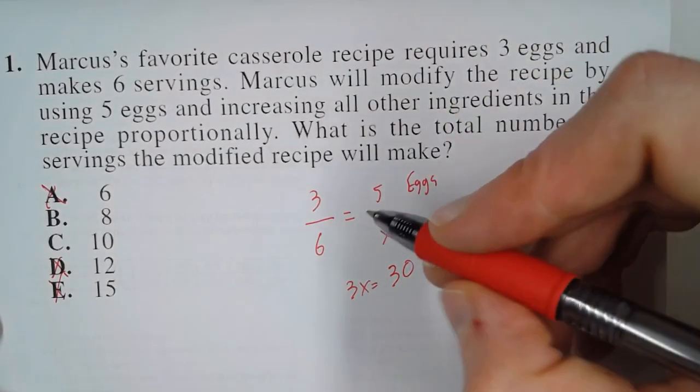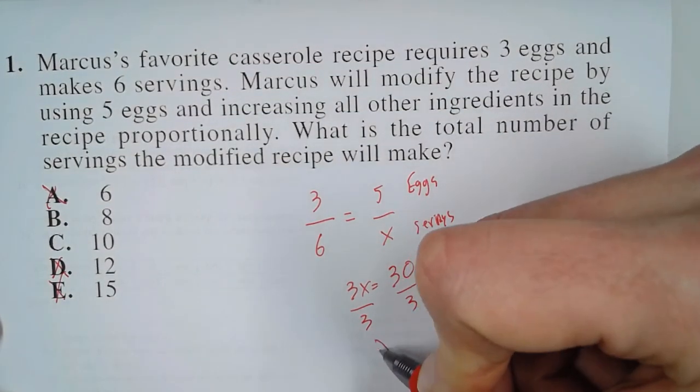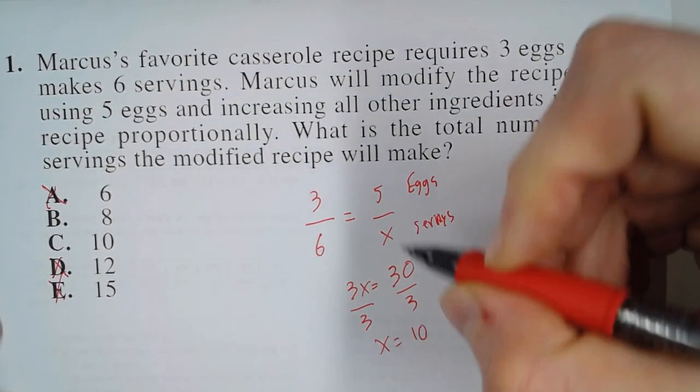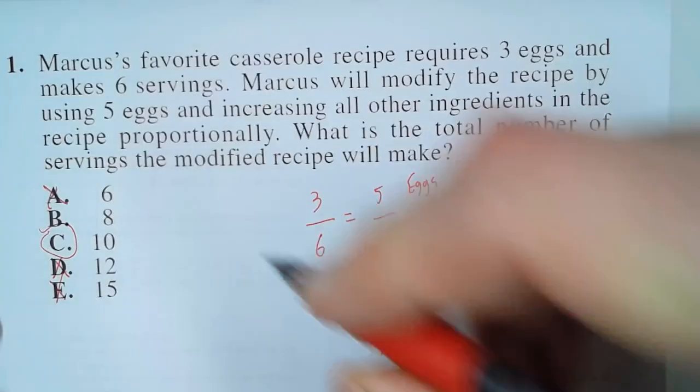So then to get X by itself, we divide by three. And we get an answer of 10. And there's our answer.